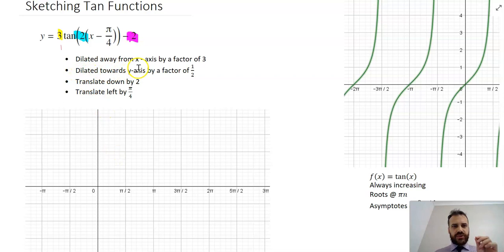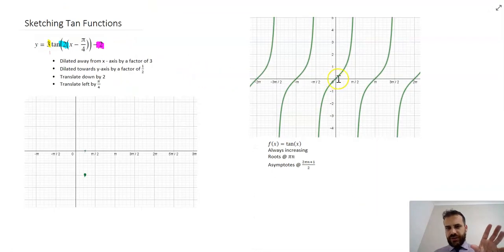What about dilated towards the y-axis by a factor of a half? That's going to really squash up my function. In this function, my roots appear every π. So π, 2π, 3π, 4π. If it's squashed by a factor of a half, that means that my roots are going to occur twice as often. So at π/2, at π, at 3π/2, at 2π. And that means that my asymptotes are also going to occur twice as often, at π/4, at 3π/4, at 5π/4.